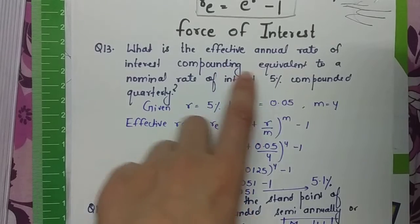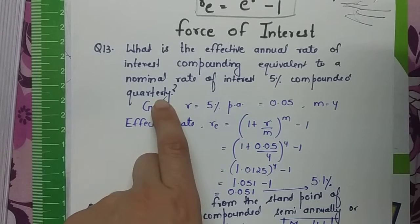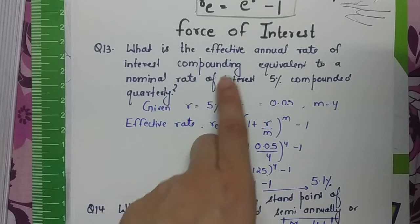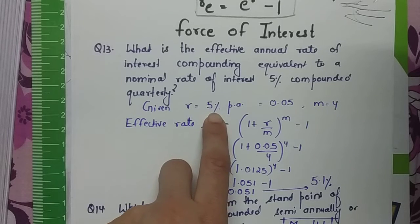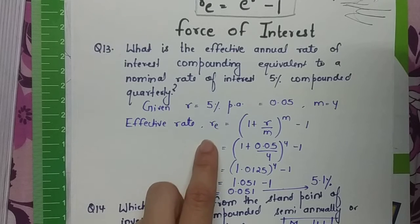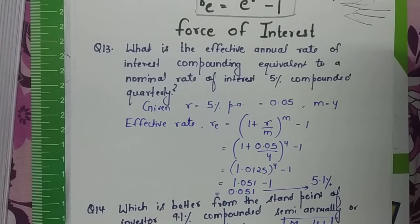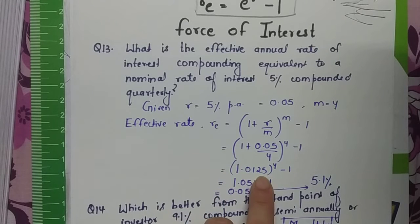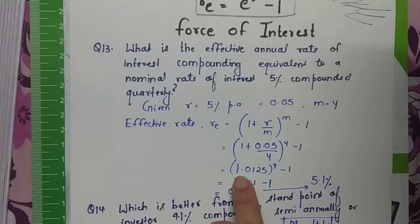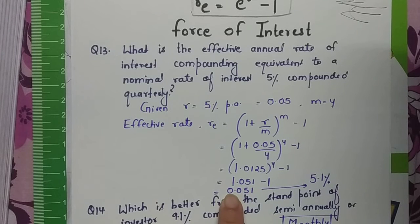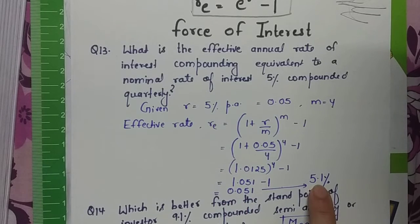Question: What is the effective annual rate of interest equivalent to a nominal rate of 5% compounded quarterly? Here R = 5% = 0.05 and m = 4. Applying the formula: RE = (1 + 0.05/4)^4 − 1 = (1.0125)^4 − 1 = 1.051 − 1 = 0.051. Multiplying by 100 gives the effective rate as 5.1%.